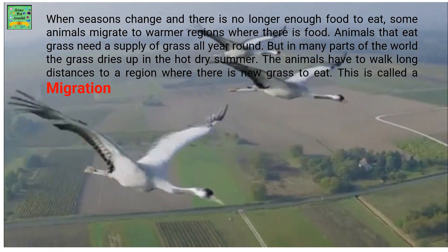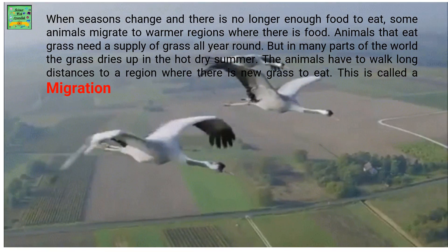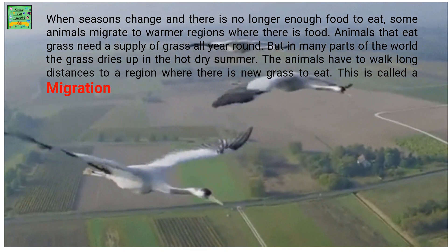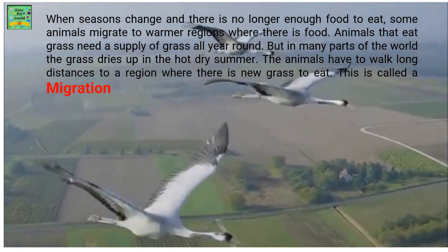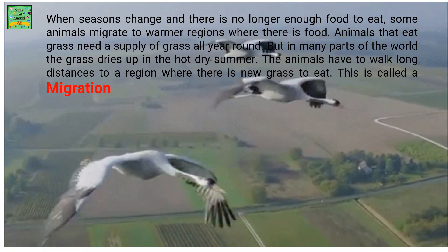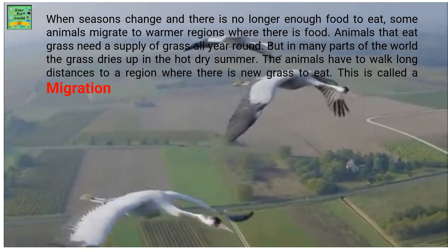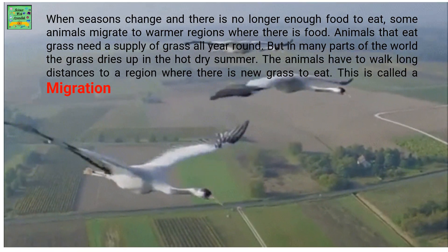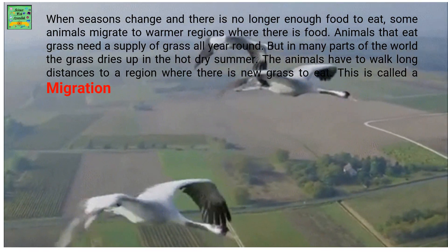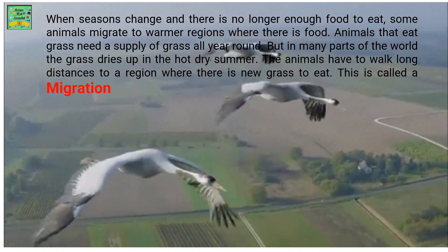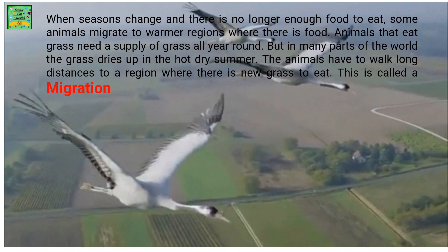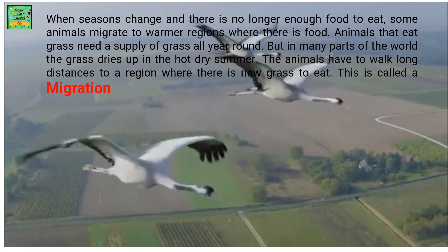When seasons change and there is no longer enough food to eat, some animals migrate to warmer regions where there is food. Animals that eat grass need a supply of grass all year round, but in many parts of the world the grass dries up in the hot dry summer. These animals have to walk long distances to a region where there is new grass to eat, and this is called migration. Animals which cannot travel long distances hibernate, while animals that can travel long distances, such as birds, migrate.